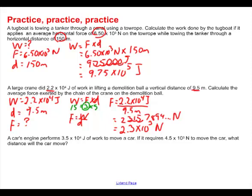A car's engine performs 3.5 times 10 to the 4th joules of work to move a car. If it requires 4.5 times 10 to the 3 newtons to move the car, then what distance will the car move? So let's make a list of what we've got here. Our work is 3.5 times 10 to the 4th joules of work. We're given a force,